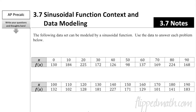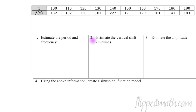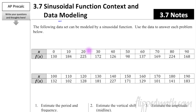Welcome back to the very last lesson of the first half of unit three. Today is lesson 3.7: sinusoidal function context and data modeling. They're going to give us some data and we have to come up with an equation that models that data. The problems want you to find the period, frequency, midline, amplitude, and all that stuff.